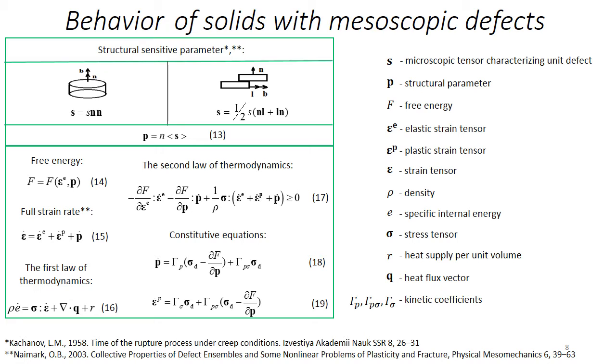It is assumed that the media contains two types of defects, volume and shear, which are modeled by a microscopic tensor ξ. Microscopic tensor P characterizes volume concentration and orientation of defects, which can be determined by averaging of ξ over the elementary volume. Parameter P has a physical meaning of an additional strain induced by initiation and growth of the defects.